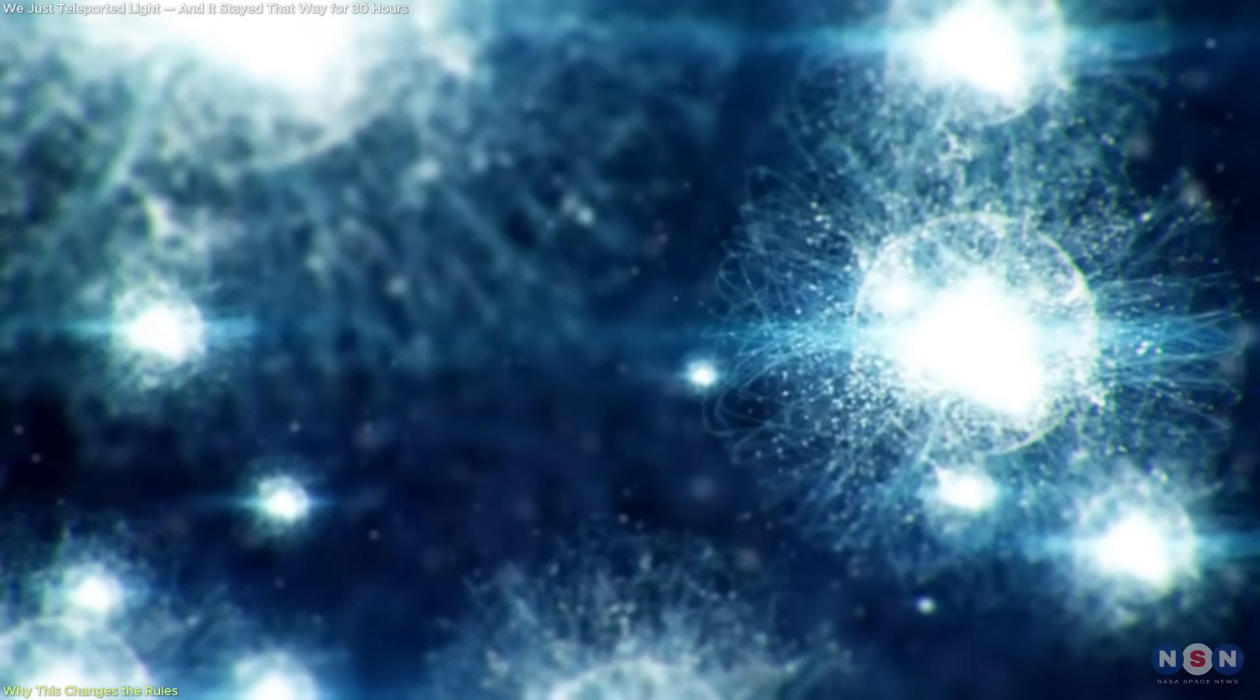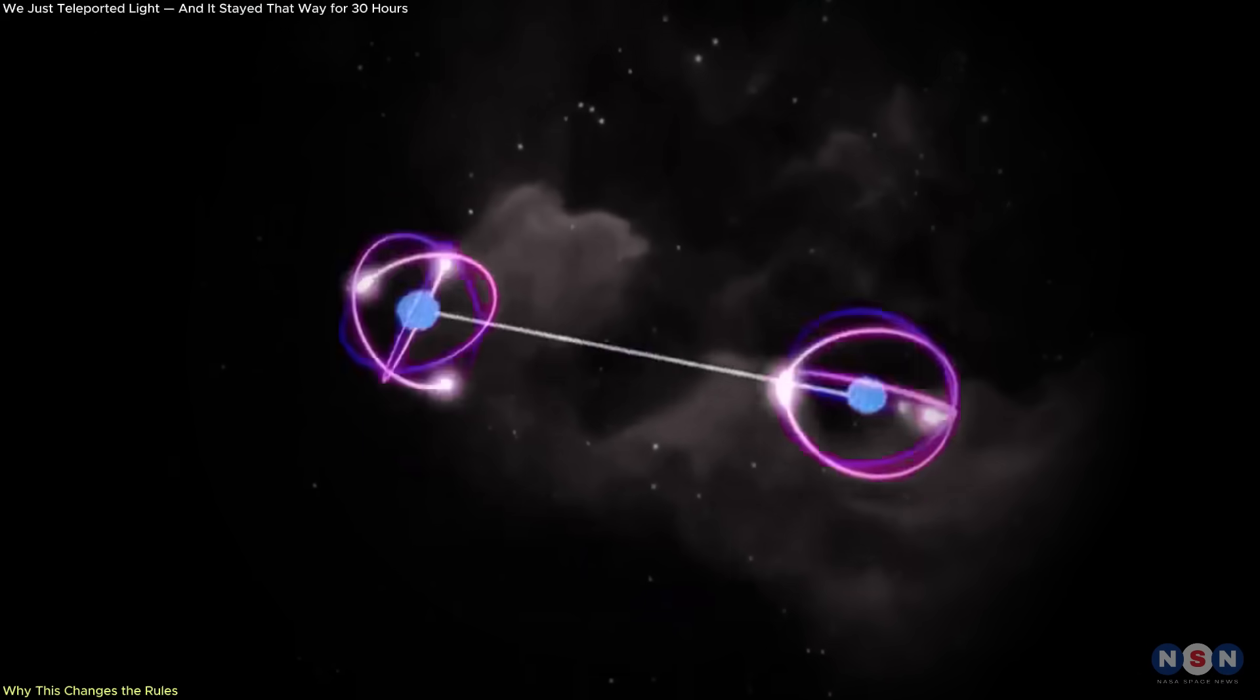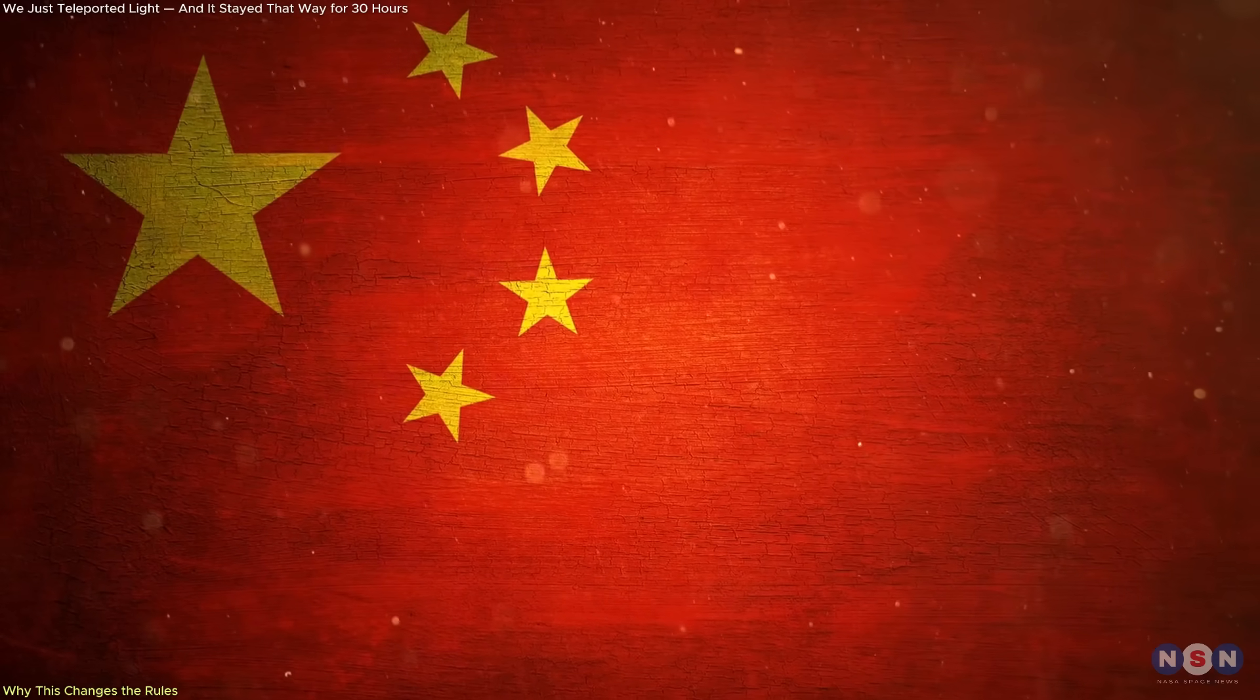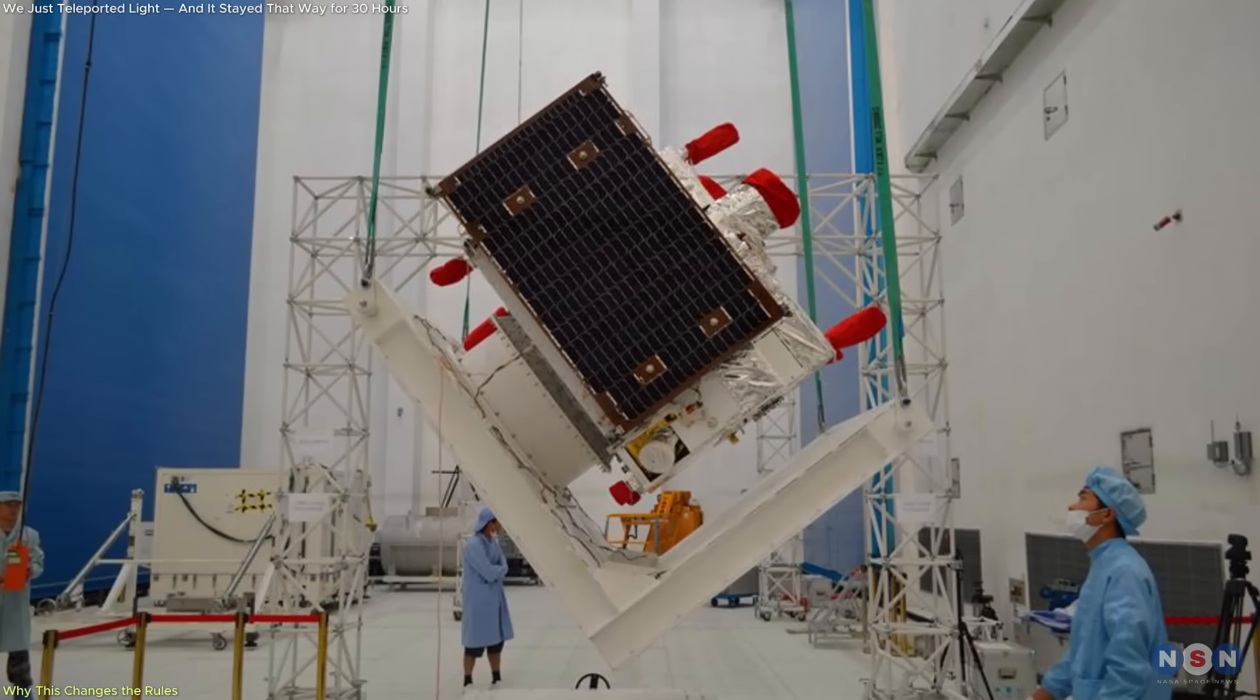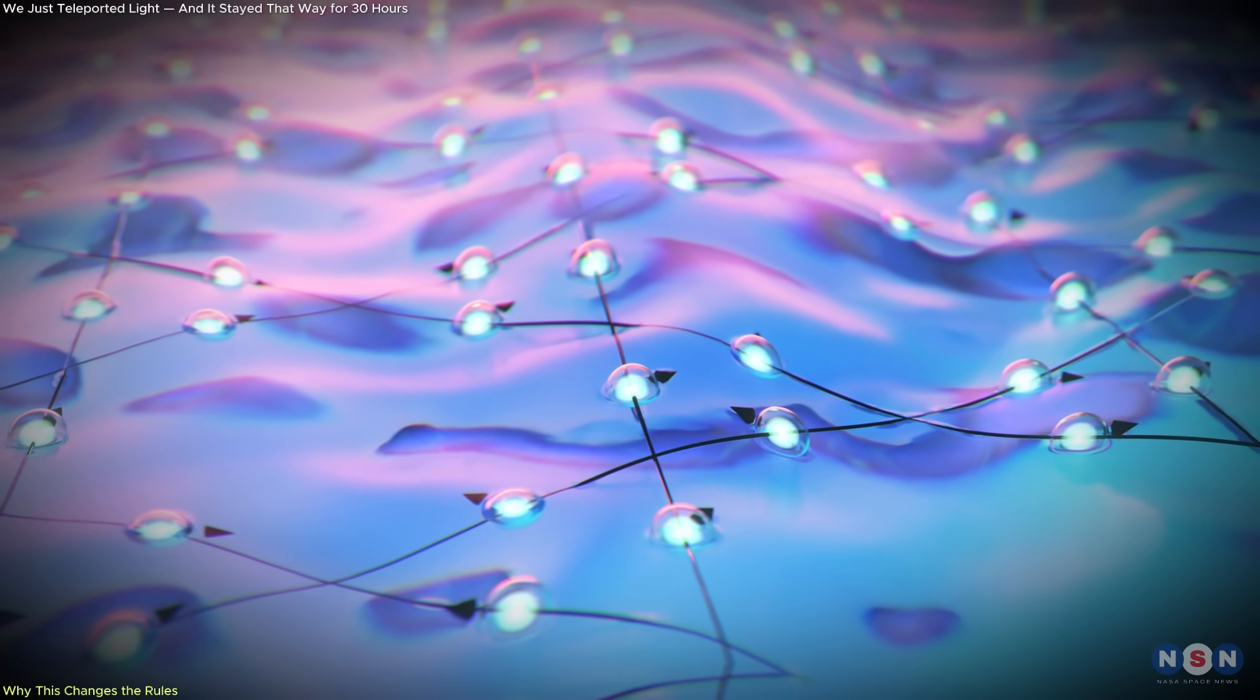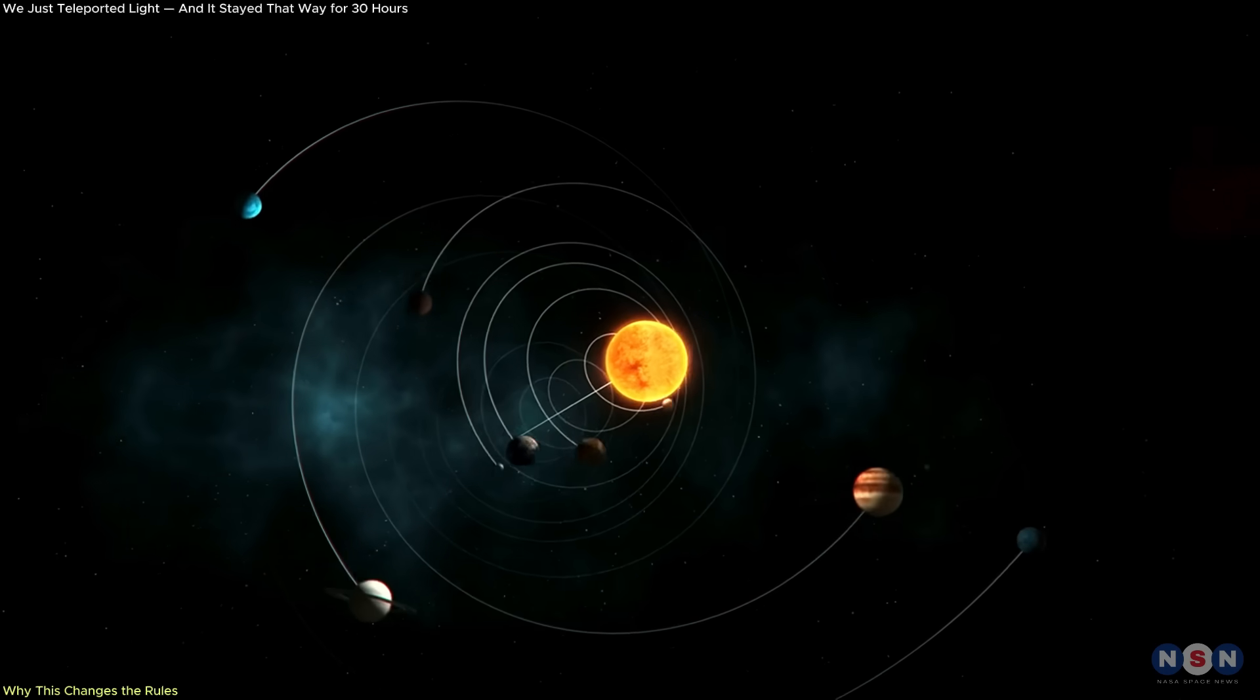And while this single experiment didn't leap across space, it lays the foundation for doing exactly that. If we can sustain entanglement over hours in noisy, unpredictable environments, what's stopping us from trying it in space? Already, nations like China are launching quantum communication satellites, such as Micius, which has performed quantum key distribution from orbit. The techniques used in this ORNL experiment, particularly the stabilization methods, could be applied to future space-based quantum networks, allowing us to scale up to truly planetary or interplanetary communication.